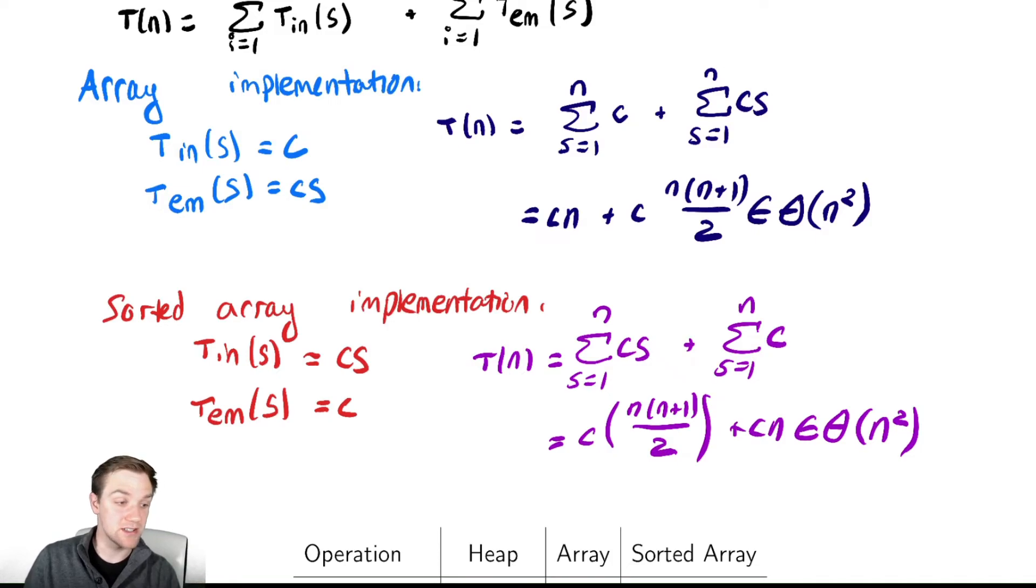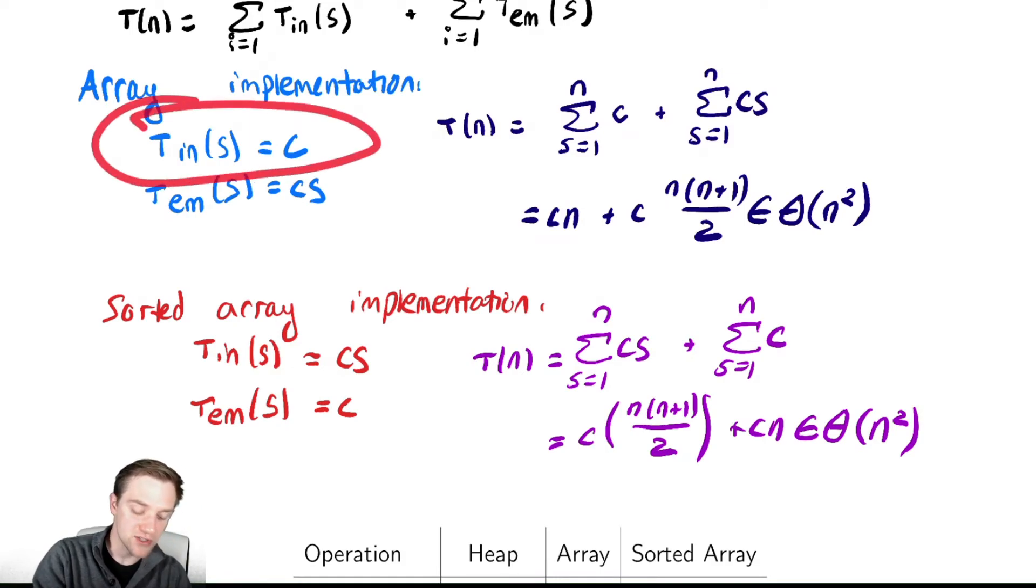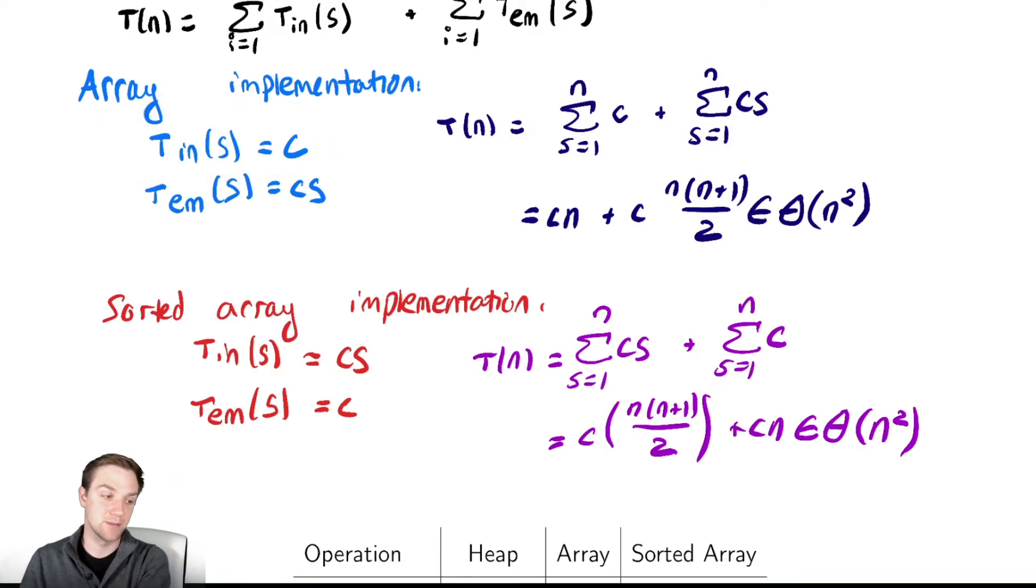Both of our alternative implementations using bland arrays without the heap structure take quadratic time, and our heap implementation took n log n time. So it was a slight improvement by using the heap over these two data structures. However, that's not always the case if we perform certain methods. For example, if all I needed to do was insert almost always and rarely extract max, then using a basic array might be better. Conversely, if I needed to perform lots of extractions after building my data structure but rarely needed insertions, then the sorted array implementation might be better.